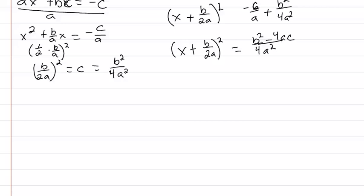Okay, now we're going to take the square root of both sides. So now we have x plus b over 2a